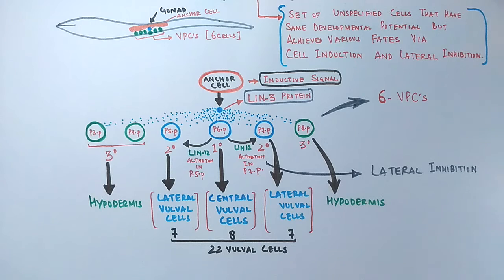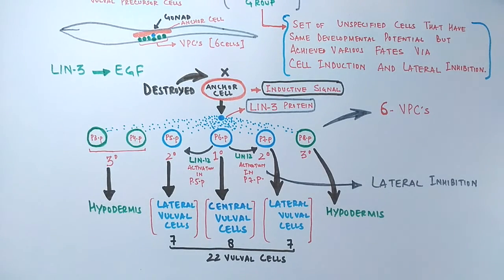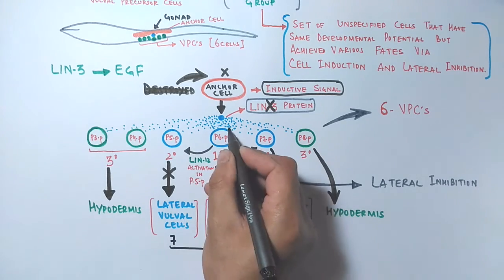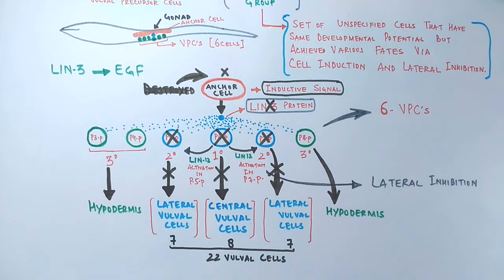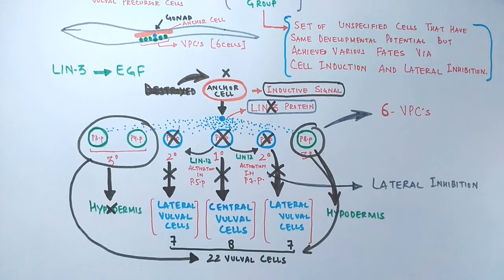Now let's discuss some conditions involving the presence and absence of inductive and lateral signals. First, if the anchor cell is destroyed, there will be no inductive LIN-3 signal, and all VPCs will develop into hypodermis rather than vulva cells. Second, if only the three inner cells — the 1° and 2° VPCs — are destroyed, then the outer VPCs, which normally develop into hypodermis, will instead develop into vulva cells. This is all about vulva development in C. elegans via inductive signaling and lateral inhibition.